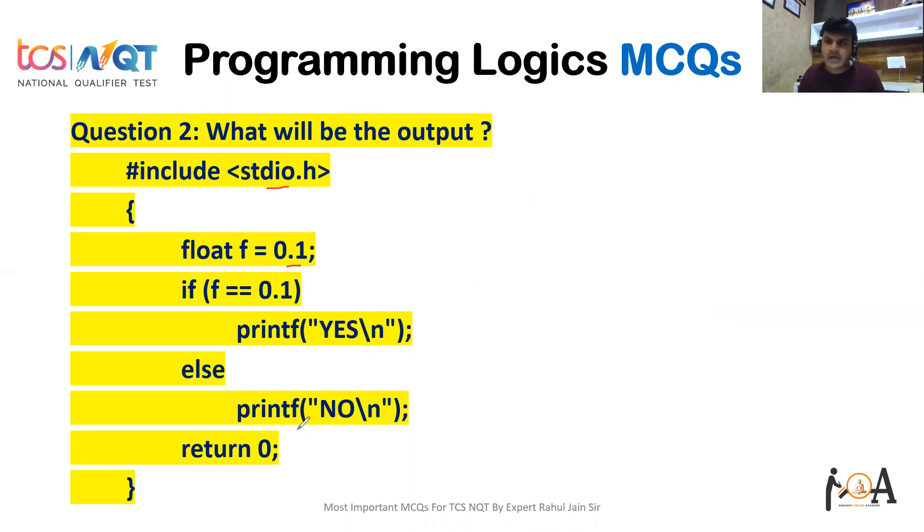So what would be the output of this question? It's a very easy question. If you see here, if f == 0.1, floating point f is declared as 0.1, but if you see here f == 0.1, so basically it will print